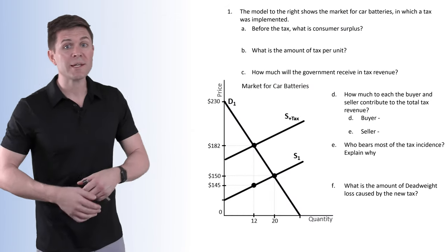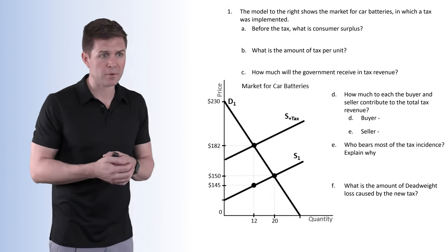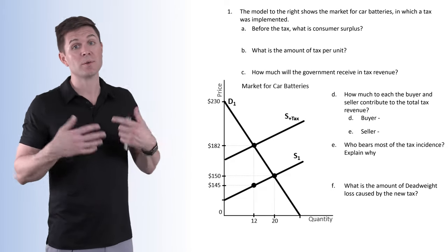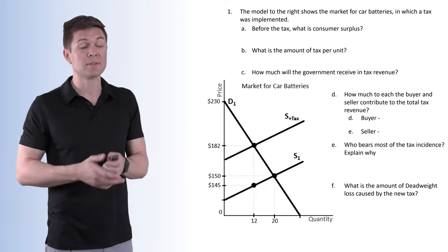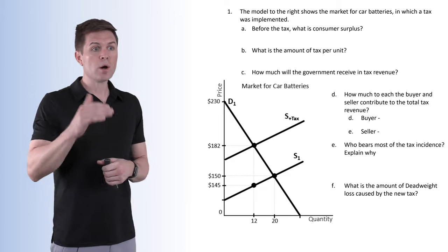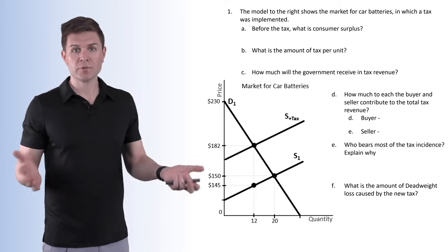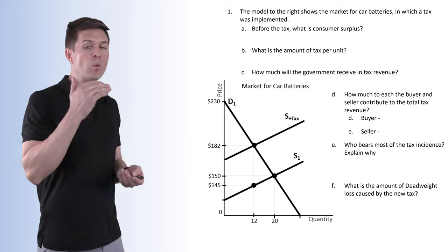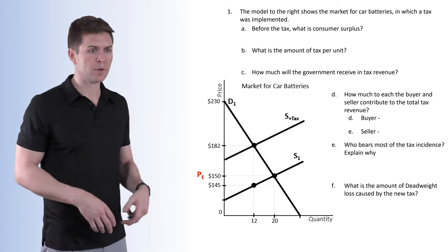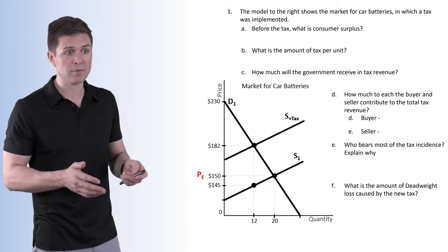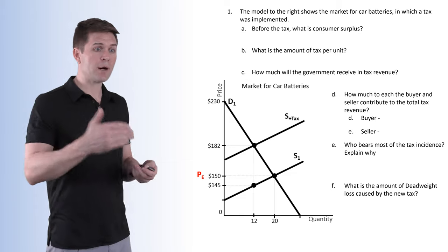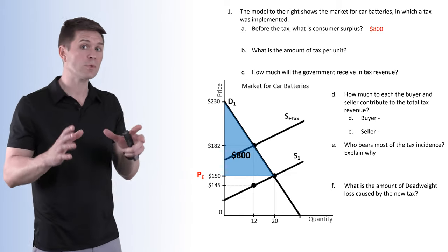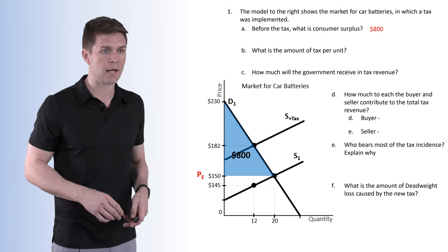The first model we're looking at is the market for car batteries, which has a relatively inelastic demand and a relatively elastic supply curve. Part one: before the tax, what is consumer surplus? The first thing we need to identify is where the market was before the tax — our equilibrium price would have been at $150. Everything above the equilibrium price, below the demand curve, is our consumer surplus. Consumer surplus before the tax is $800.